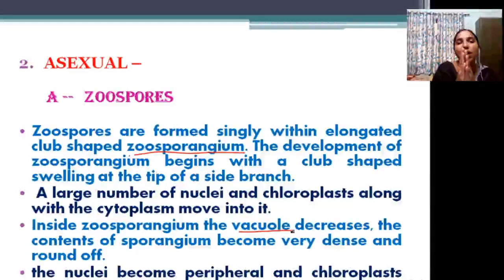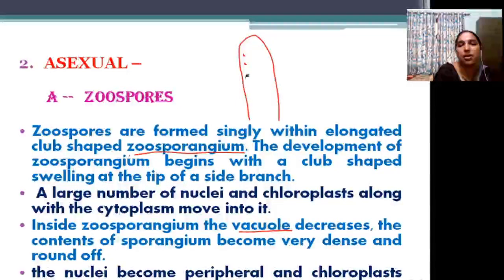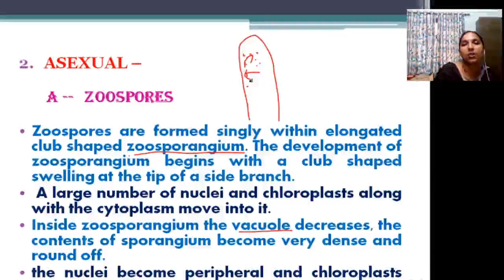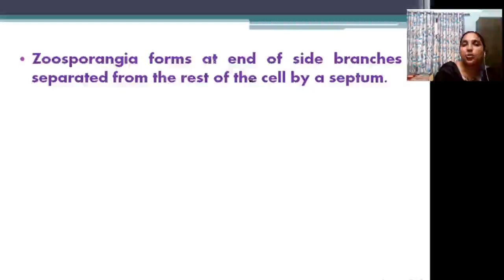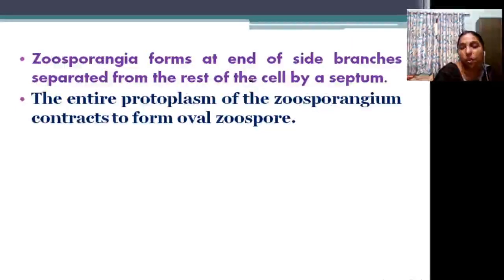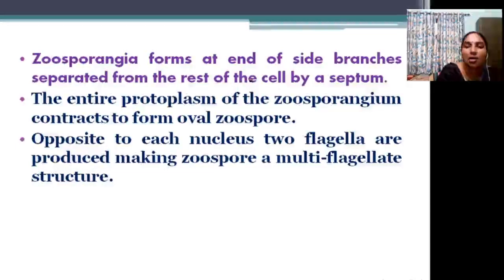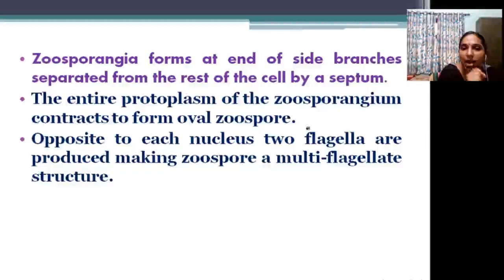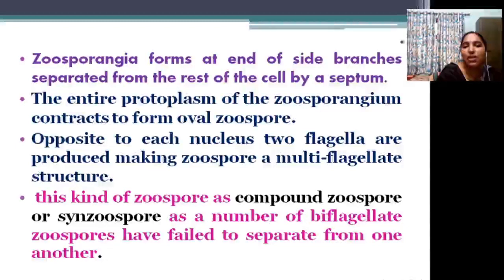The zoosporangium forms at the end of branches and is separated by a septum. The entire protoplasm contracts to form an oval zoospore — a large zoospore where the nucleus is on the peripheral side. From each nucleus, two flagella develop, so a multiflagellate structure develops. This multiflagellate zoospore is known as a compound zoospore or synzoospore.